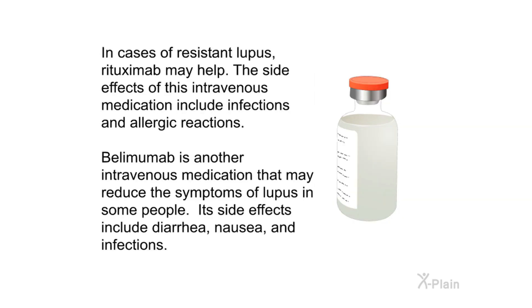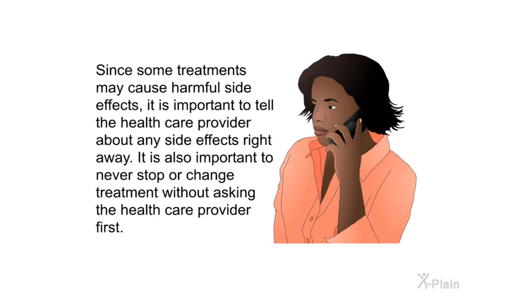In cases of resistant lupus, rituximab may help. Side effects of this intravenous medication include infections and allergic reactions. Belimumab is another intravenous medication that may reduce the symptoms of lupus in some people; its side effects include diarrhea, nausea, and infections. Since some treatments may cause harmful side effects, it is important to tell the healthcare provider about any side effects right away, and never stop or change treatment without asking the healthcare provider first.